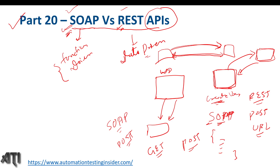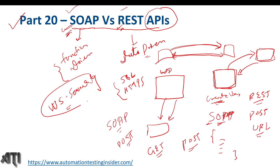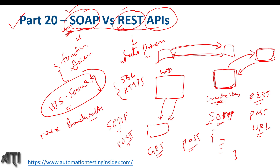Security-wise, SOAP is more secure. It uses WS-Security, which stands for Web Services Security. REST uses SSL and HTTPS protocols. SOAP uses SSL and HTTPS as well, plus WS-Security on top — that's the reason it is more secure than REST. SOAP is also more complex to implement, while REST APIs are less complex. SOAP uses more bandwidth, whereas REST uses less bandwidth.